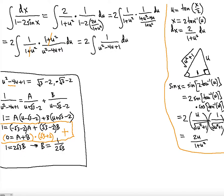Using the original second equation with B = 1/(2√3), and since A plus B = 0, A must be the negative of B. So A equals negative 1 over 2√3.